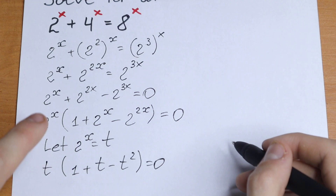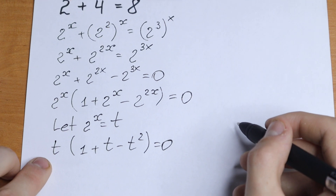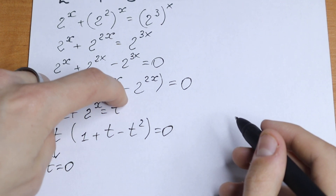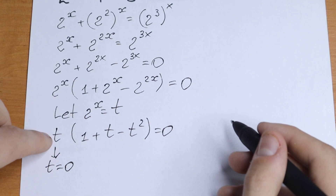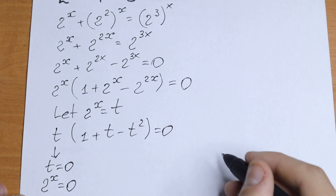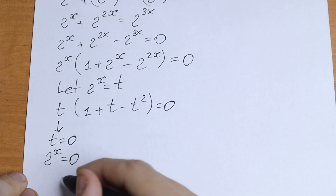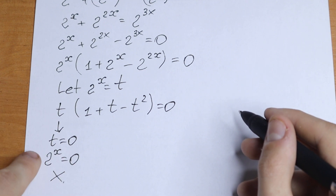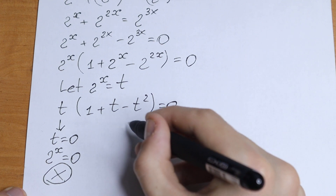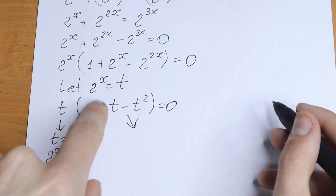Moreover, we have a product. If a product equals 0, then one factor equals 0 or the other factor equals 0. Starting with t equal to 0: since t equals 2 to the power x, we would have 2 to the power x equal to 0. This equation has no solution because 2 to the power x cannot equal 0. So the first case gives no solution. For the second factor we have a quadratic equation, giving us two roots.